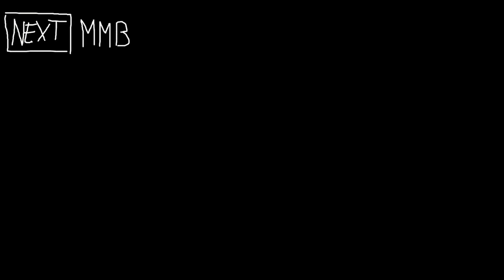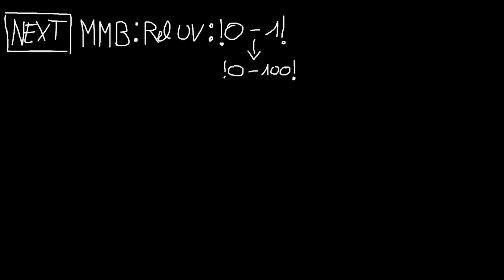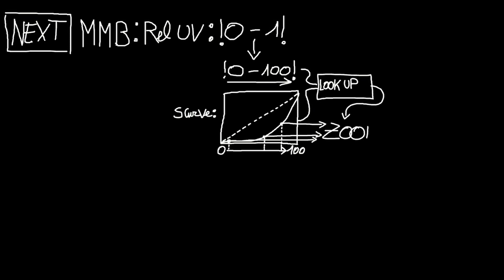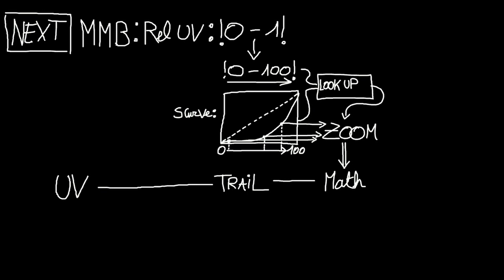In the next part, I'll use the middle mouse button to obtain the relative UV, which I'll first clamp between zero and one, then range-map from zero to one hundred. I'll also use an S-curve to make zooming more accurate and precise when zoomed in. By giving it the same zero-to-one-hundred range as the relative UV, I can hook both up to a Lookup CHOP, so when zooming between zero and one hundred the Lookup CHOP looks up the corresponding S-curve values to get the zoom value. When drawing a line, the UV coordinates are recorded in a Trail CHOP.